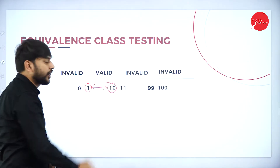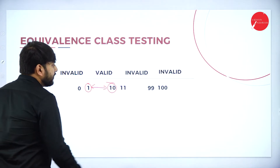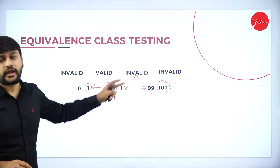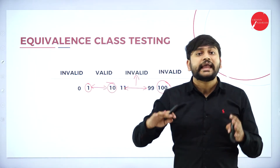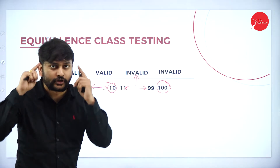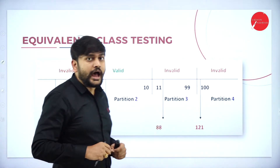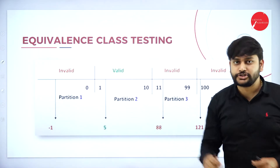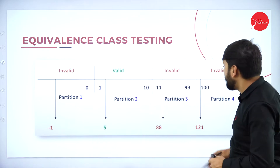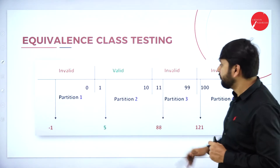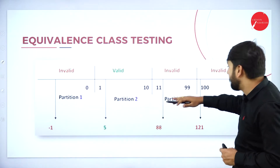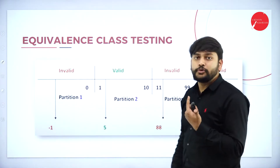Next, from 11 to 99, I will call this invalid. The triple-digit numbers (100 and above) are also invalid, and 0 is also invalid. So I am dividing this into different partitions. Observing my diagram, I have four different partitions: partition number one, two, three, and four.